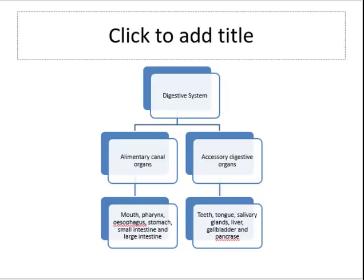The digestive system is broken down into two main groups of organs: alimentary canal organs and accessory digestive organs. The alimentary canal consists of organs through which food, or feed, will pass. It runs from the mouth to the anus, and this includes the mouth, pharynx, oesophagus, stomach, small intestine, and large intestine.